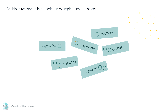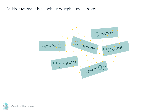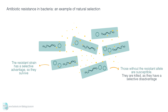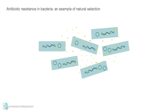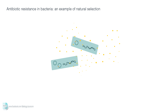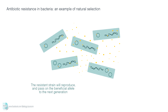When an antibiotic is applied to the population of bacteria, it acts as the selective agent as it provides the selection pressure. The resistance strain has a selective advantage, so they survive. The ones without the resistance allele are susceptible — they are killed as they have a selective disadvantage. The resistance strain will reproduce and pass on the beneficial allele to the next generation. This is called vertical transmission.